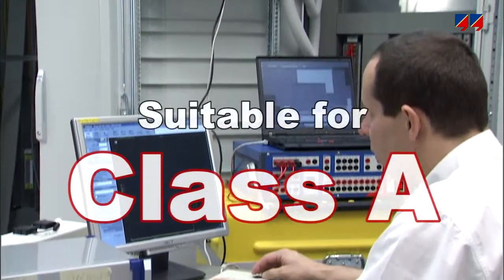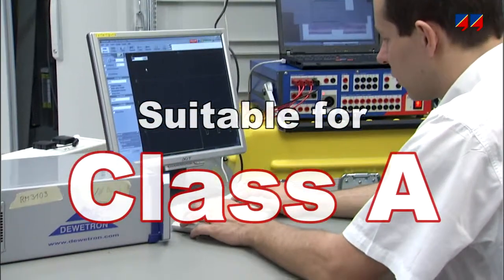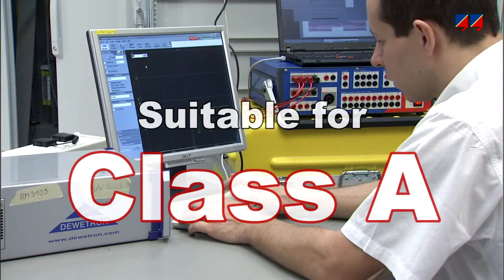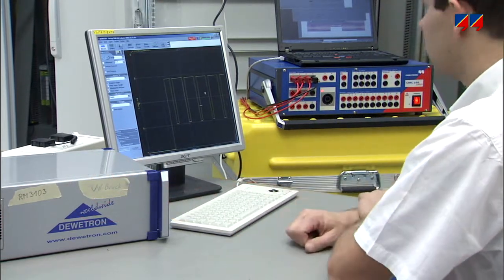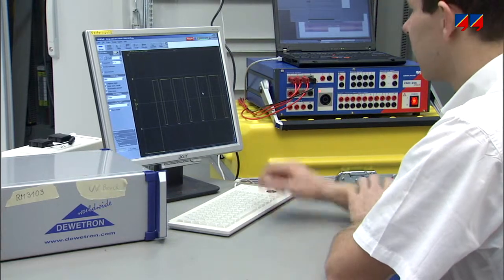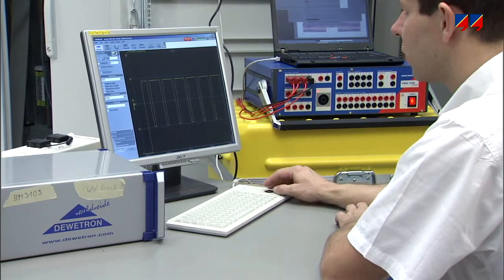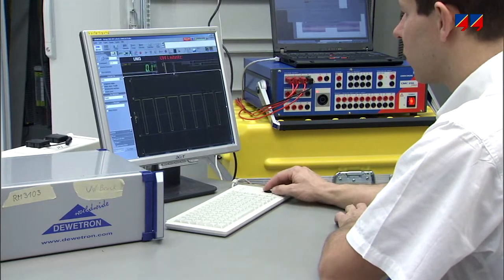Due to its accuracy, the CMC 256 Plus is suitable for testing Class A power quality devices. Manufacturers of power quality devices can use the CMC 256 Plus in the development and quality assurance of their products.